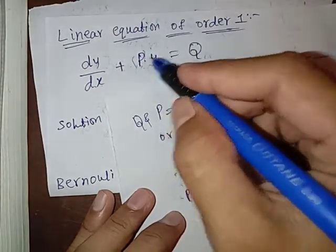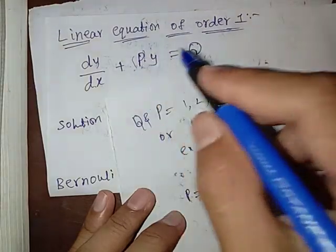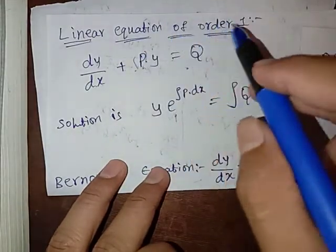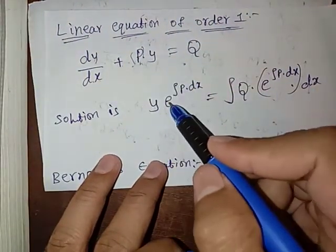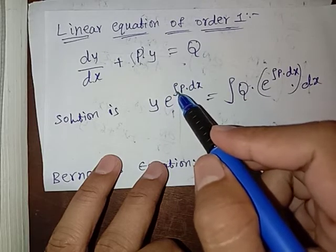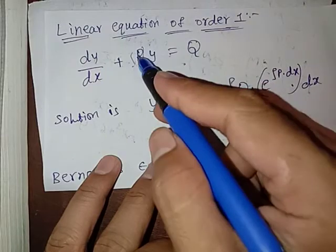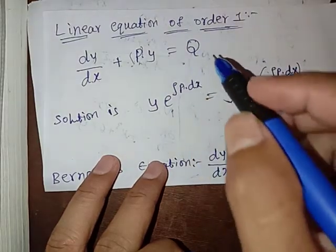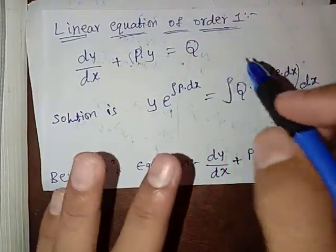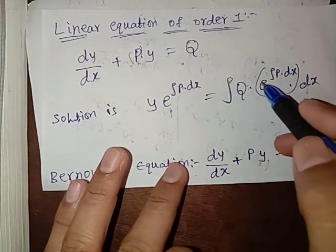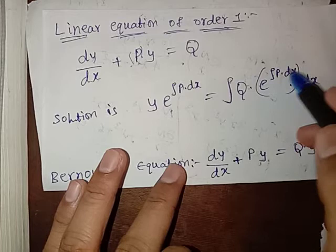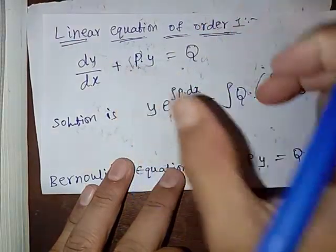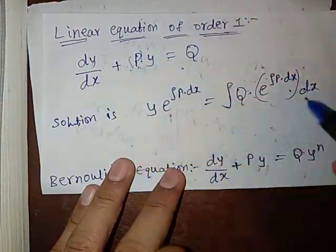Since p and q are purely functions of x or constants, the solution of this linear differential equation of order 1 is: y × e^(∫p dx) = ∫ q × e^(∫p dx) dx. Here p is purely a function of x or a constant, and q is also a function of x or a constant value.